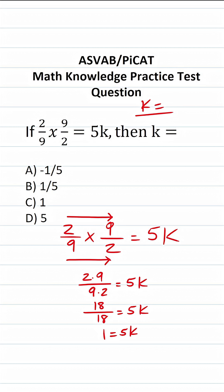Again, to get k equal to something by itself, we're going to divide both sides of the equation by 5. This crosses out that says k is equal to 1 fifth.